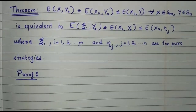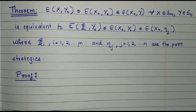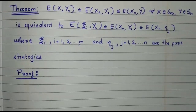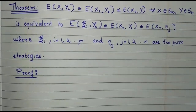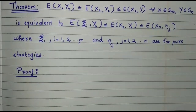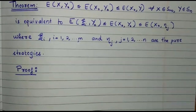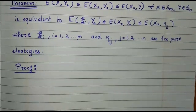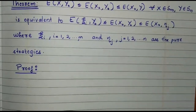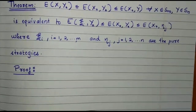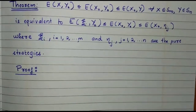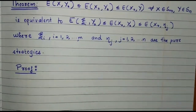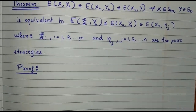Today, I am going to discuss an easy theorem in the chapter Theory of Games. In this video, we are going to prove the equivalency of two given conditions in the theorem. The given condition: E(x, y0) ≤ E(x0, y0) ≤ E(x0, y) for all x ∈ Sm, y ∈ Sn, is equivalent to the condition E(ψi, y0) ≤ E(x0, y0) ≤ E(x0, ηj).